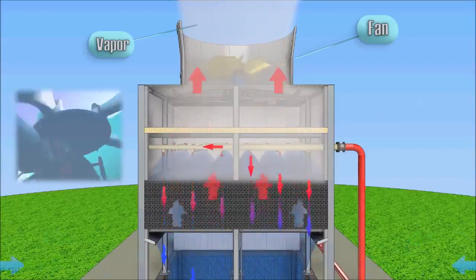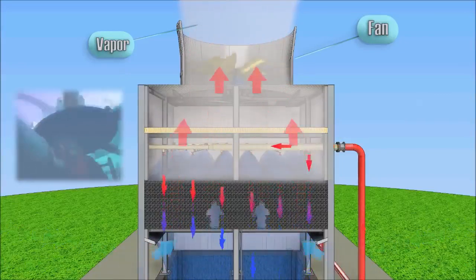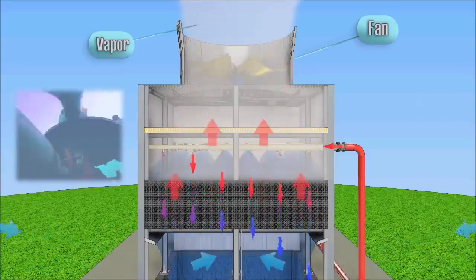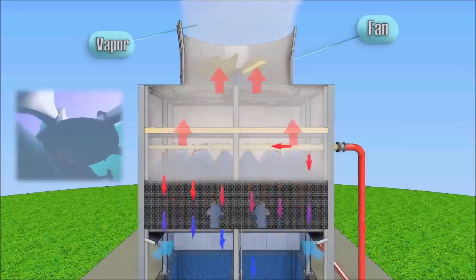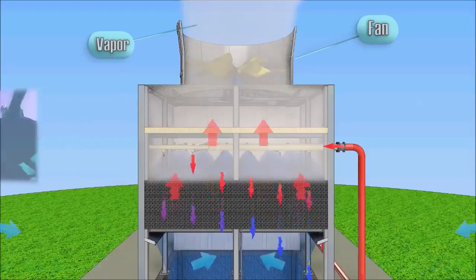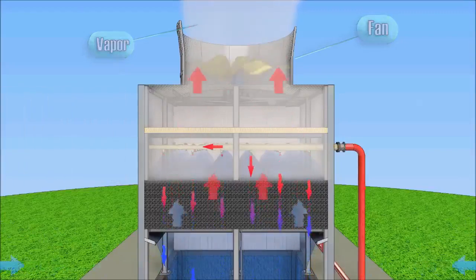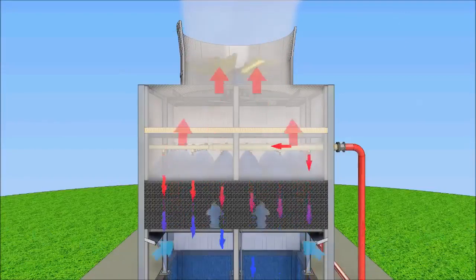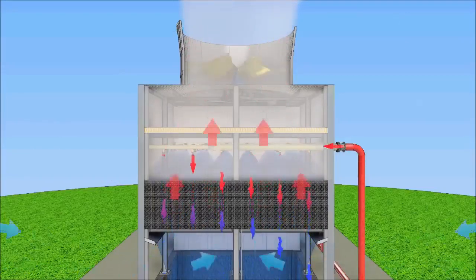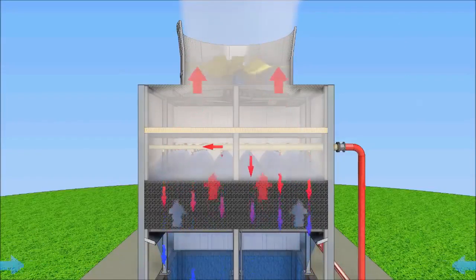Saturated with water vapor, the water cooling efficiency of fan cooling towers may be controlled by varying the supply air fans and changing the fan speed.